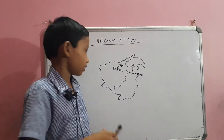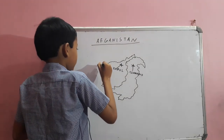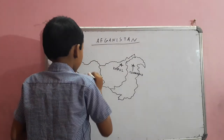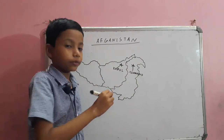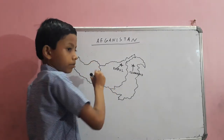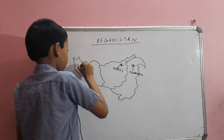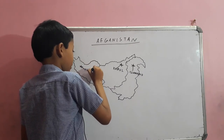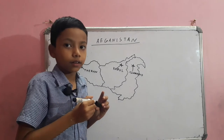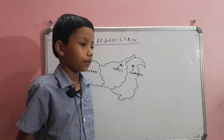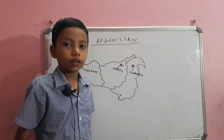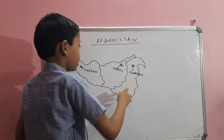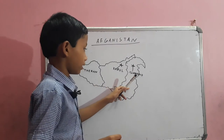There are also other countries, like Iran. Iran's capital is Tehran. But where is it? It will be right here, maybe. Yeah, that's the capital of Iran. And what does Afghanistan border? It borders Iran and Pakistan.